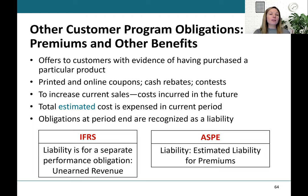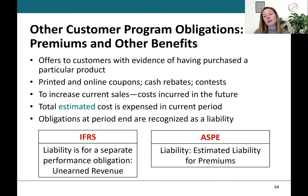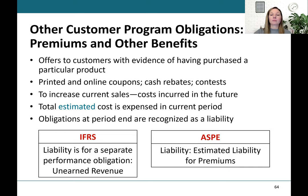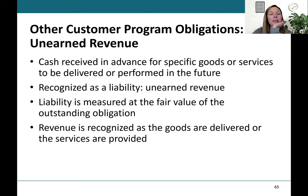There are also premiums and other benefits, where manufacturers reward customers for purchasing certain products — for example, sending in a UPC code for a cash discount or collecting three UPC codes for a gift. We need to think about matching: make a reasonable accrual of the expense associated with whatever that promise is, and expense it in the current period. Similarly, cash received in advance for specific goods or services to be performed in the future always needs to be set up as unearned revenue. The unearned revenue amount would be the fair value of the outstanding obligation, and revenue is recognized as goods or services are delivered.